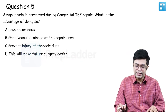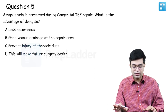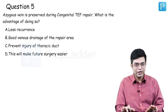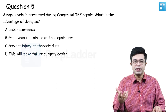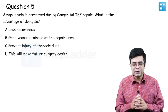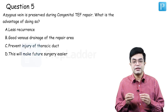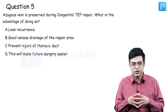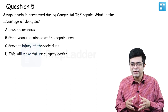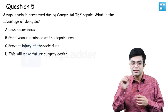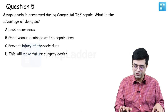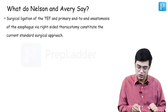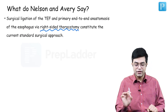Question number five was a difficult question: azygous vein is preserved during congenital tracheoesophageal fistula repair — what is the advantage? This is a controversial area with a lot of ongoing research. The most common variety presenting in the neonatal period is type C TEF — proximal atresia with distal fistula. Patients present with respiratory distress, abdominal distension, and frothing from the mouth requiring urgent surgery. Standard surgical management per Nelson: surgical ligation of TEF and primary end-to-end anastomosis via right-sided thoracotomy.